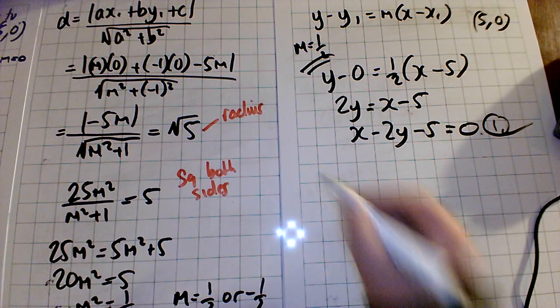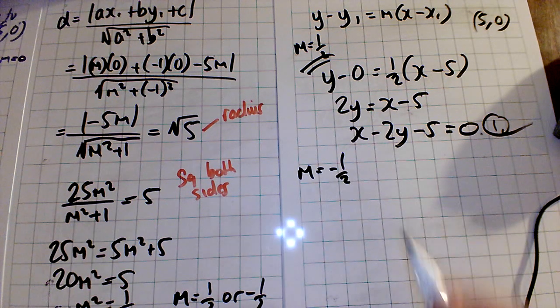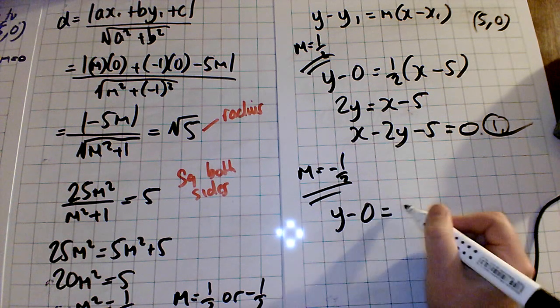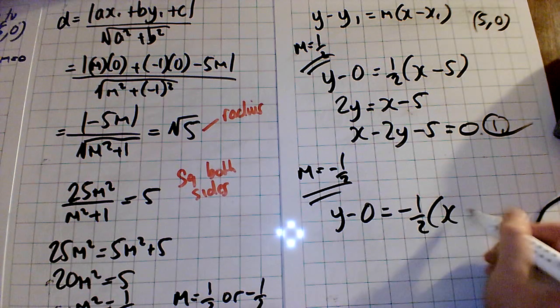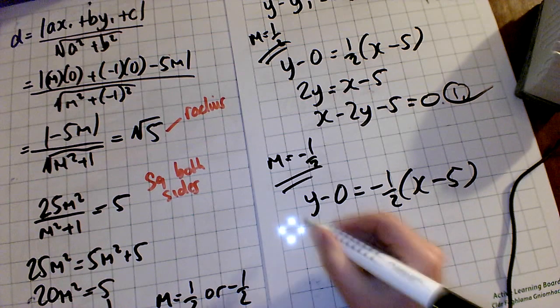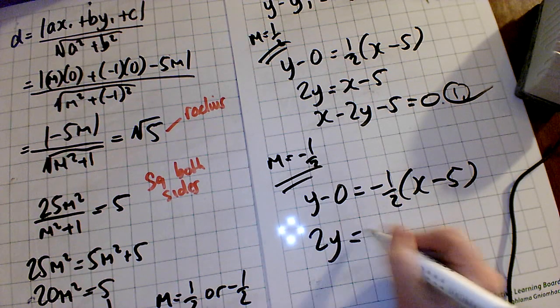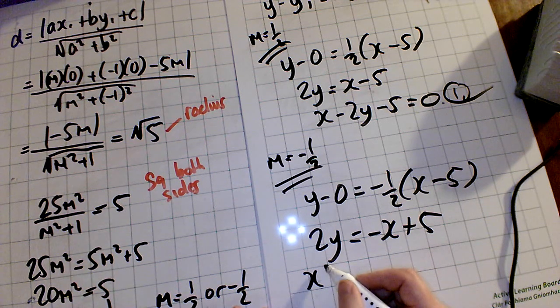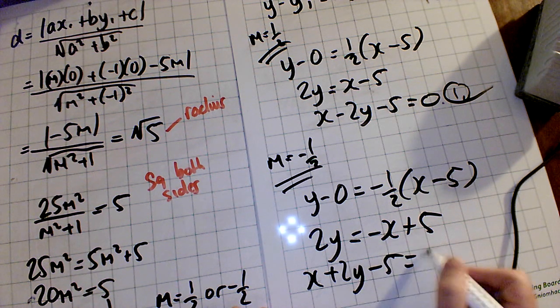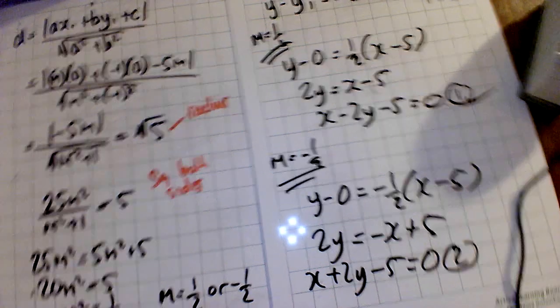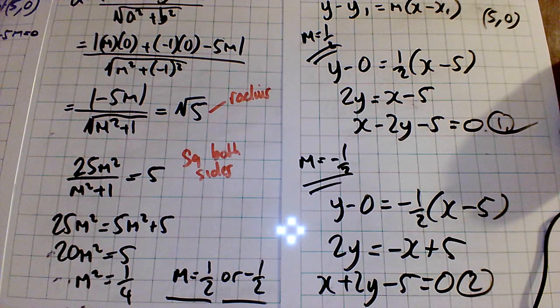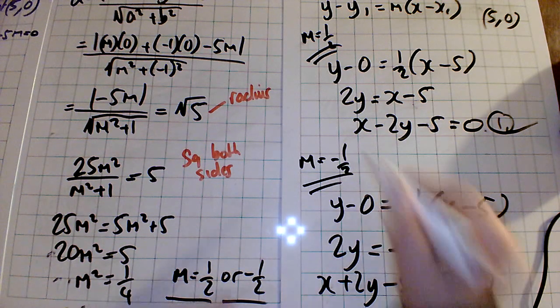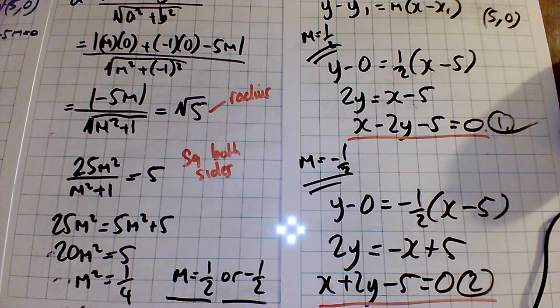And our second equation is when m is equal to minus a half. So again, we're going to do y minus 0 equals minus a half times x minus 5. Very similar to the last one. Multiply the two up here, it becomes 2y equals minus x plus 5. I'm going to bring everything to this side first. And we get x plus 2y minus 5 equals 0. And that's my second equation. And all you were asked was find the equation of the two tangents, well, of the tangents, but you know it's 2. And we've got that. Here is one answer. And here is another answer.